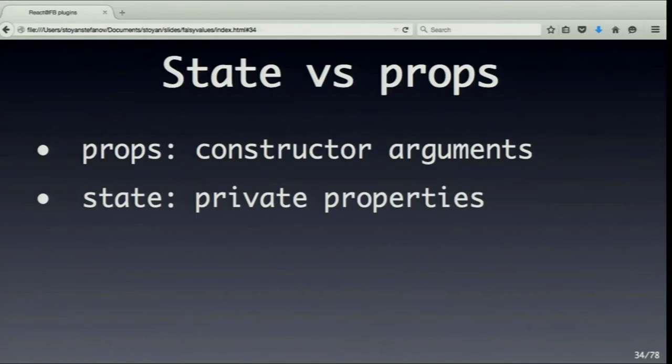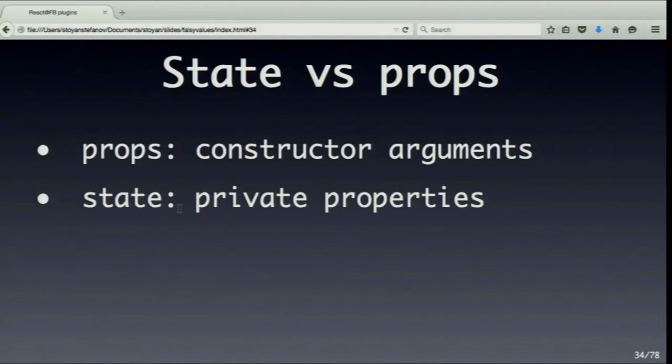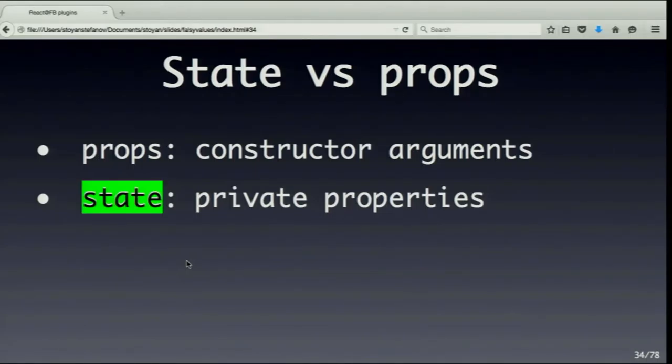A common question when coming to React: when should you use state vs. properties? It's analogous to object-oriented programming. Properties are whatever is passed to your component from its users — like arguments to a constructor. You shouldn't mutate those properties yourself; in fact, it's now deprecated and will cause a warning. State is your own private properties — how you maintain the state of your component is totally up to you.